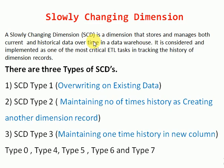Initially there are three major types: SCD type 1, type 2, and type 3. Later, based on these three types, additional types were created — type 0, type 4, type 5, type 6, and type 7. But types 4, 5, 6, and 7 are derived from the original type 1, type 2, and type 3. So first understand these three and you will get more clarity on the other types.